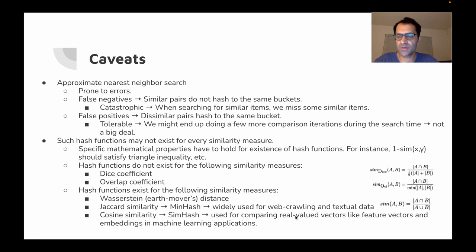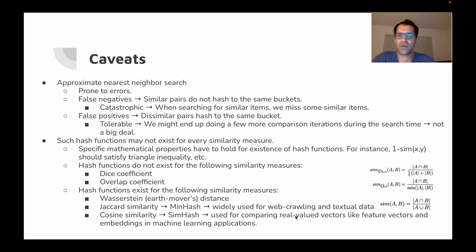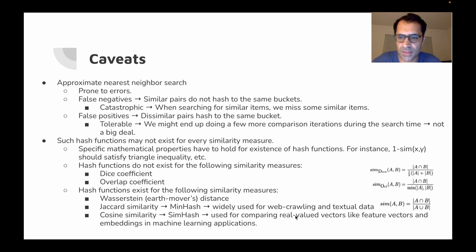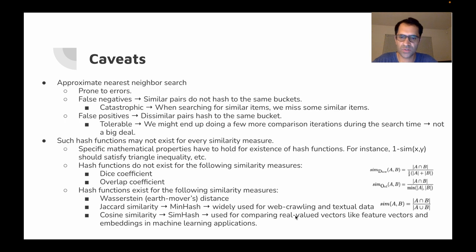Another downfall of locality sensitive hashing is that for some similarity measures, these hash functions may not exist. Certain mathematical properties must hold for the similarity measure in order for a family of hash functions to exist. For example, one minus the similarity of x and y should satisfy the triangle inequality, along with other conditions. There are cases where such a family does not exist — for instance, the dice coefficient and the overlap coefficient.